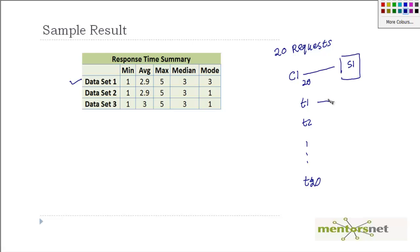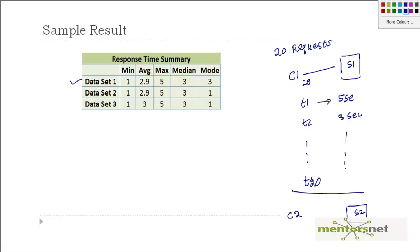Each transaction takes some time — say 5 seconds, 3 seconds, and so on. This is dataset 1. Similarly, another client C2 sending to another server S2, the same 20 requests, and we collect the response time for those requests. In this table, we are summarizing everything: the minimum value, the average value, the max, median, and mode.